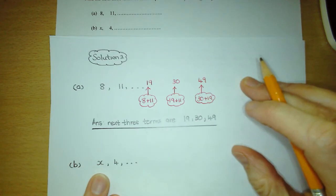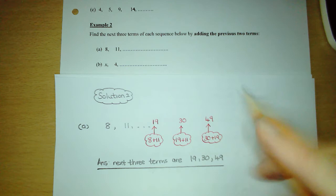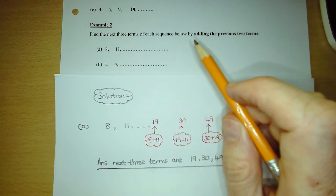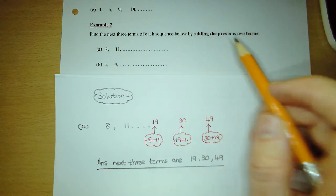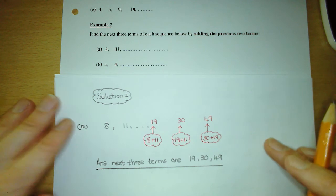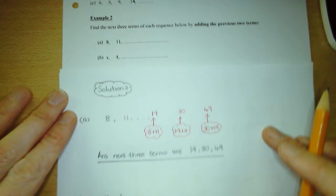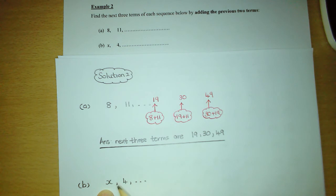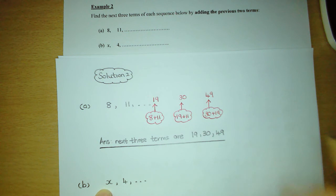Part B is the same idea. Again they've already given us the rule for this sequence — you get the next three terms by adding the two previous terms. The only difference here is that they've given us x, but it doesn't matter. The method is exactly the same. Even though we don't know what x is, we can still get the next three terms, albeit they will have x in them.